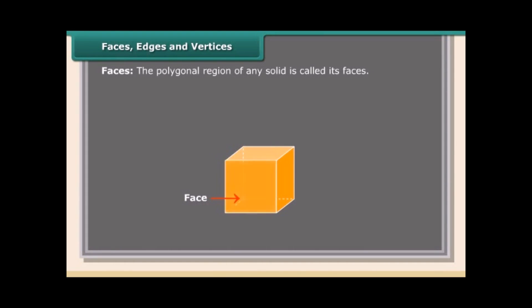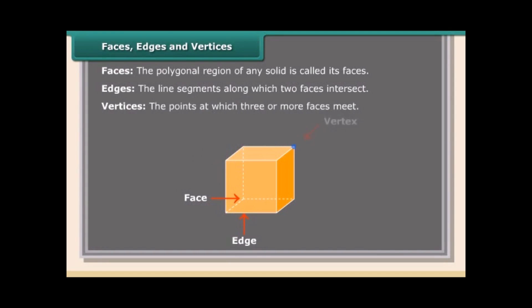Faces, edges, and vertices: The polygonal region of any solid is called its face. An edge is the line segment along which two faces intersect. Vertices are the points at which three or more faces meet.